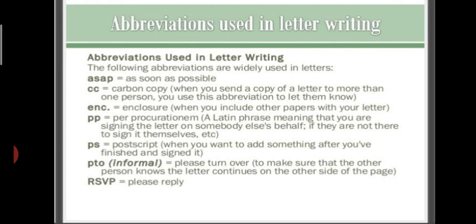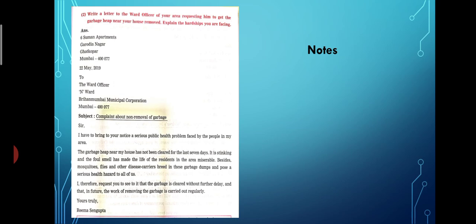PS means postscript. When you want to add something after you have finished and signed it. PTO means informal, please turn over to make sure that the other person knows the letter continues on the other side. So let me write PTO, please turn over. And the last one is RSVP means please reply. So these are few abbreviations that you need to know and understand it.